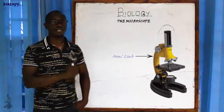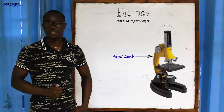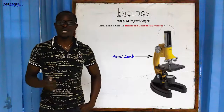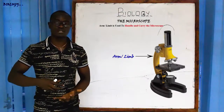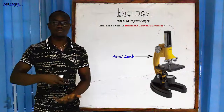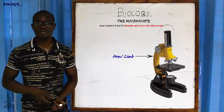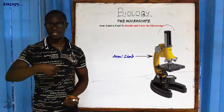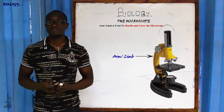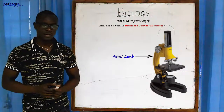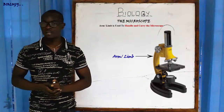Next we have the arm or limb. The function of the arm or limb is to handle the microscope. For example, if you want to carry the microscope, you hold it by the arm or limb. So the function of the arm or limb is that it is used when carrying the microscope.